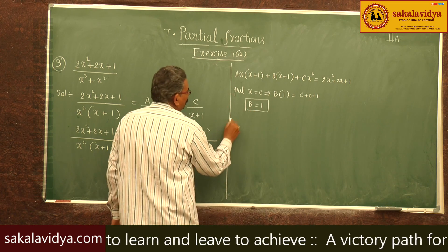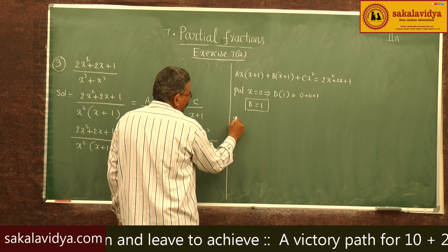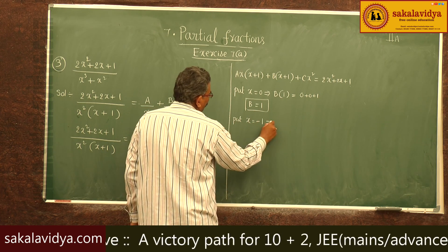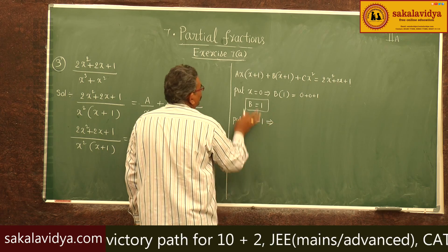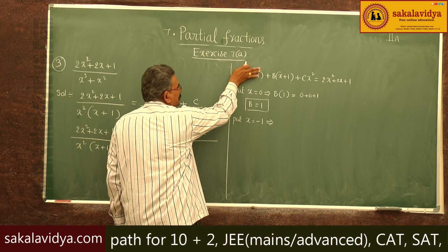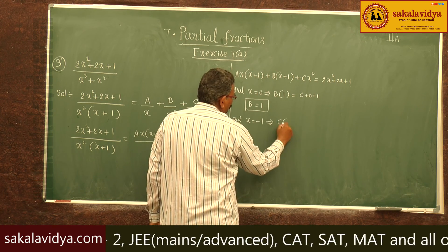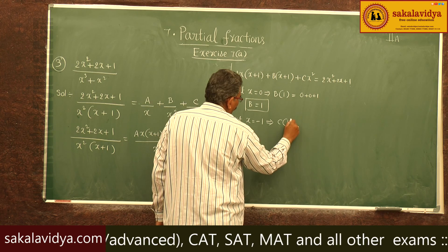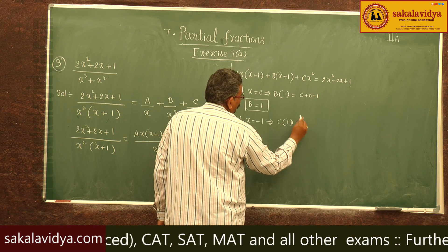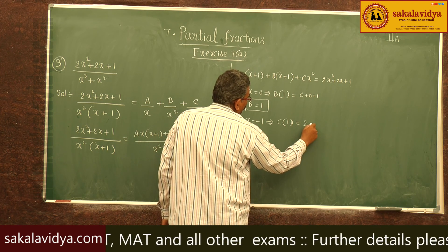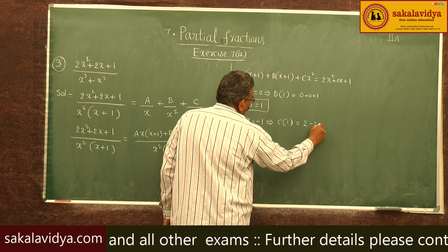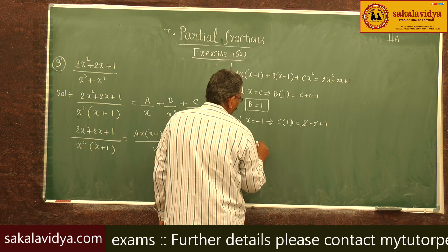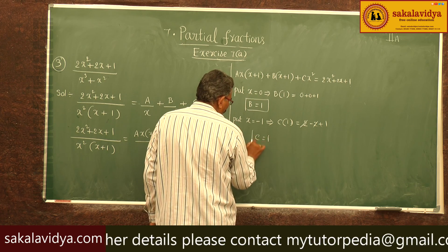Now put x = -1: the A and B terms become 0, leaving C·(-1)² = C·1. The right-hand side gives 2(-1)² + 2(-1) + 1 = 2 - 2 + 1 = 1, so C = 1.